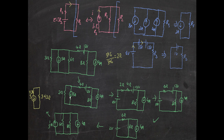Now let's simplify further. We have a current source and a voltage source. I convert the current source into a voltage source: V = IR, so five amperes times two ohms equals ten volts. The direction is downward. We place the two-ohm resistor accordingly, then add the series resistors — two ohms plus four ohms gives six ohms. So we now have a ten-volt source with a six-ohm resistor.